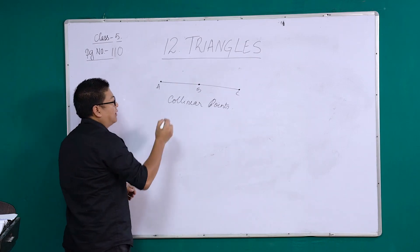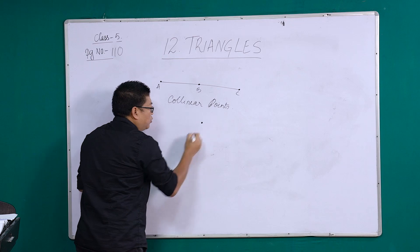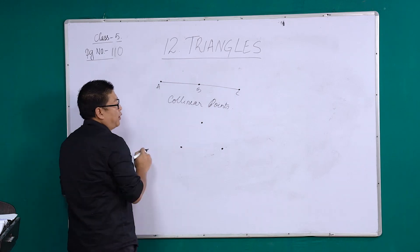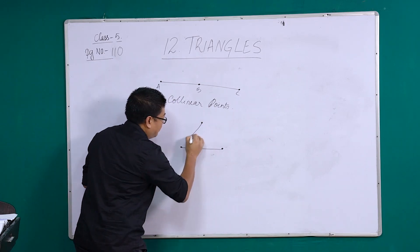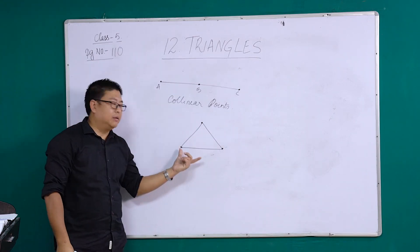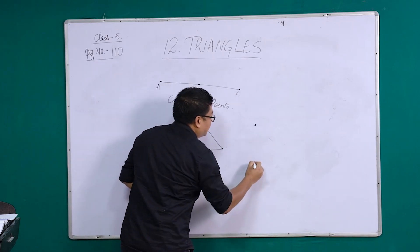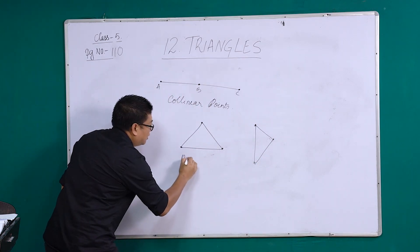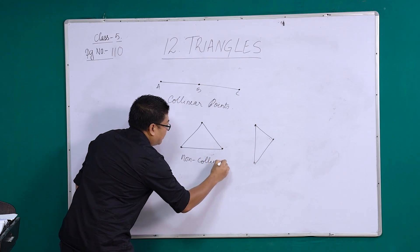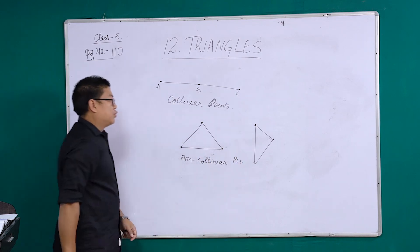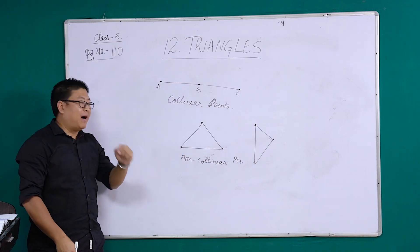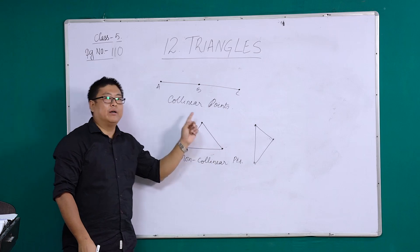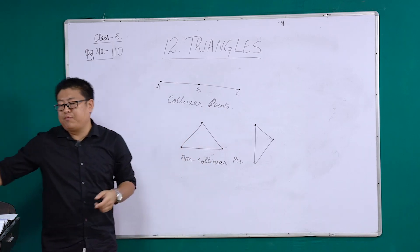If we talk about another type of point: if I draw three points anywhere and they do not lie in the same line, and I connect them, I join them, I form a triangle. I can make it in this manner also. When I join them, still a triangle. So this type of points are called non-collinear points. In short, a triangle is formed by three non-collinear points. This is the basic concept of a triangle.